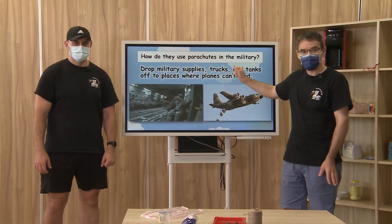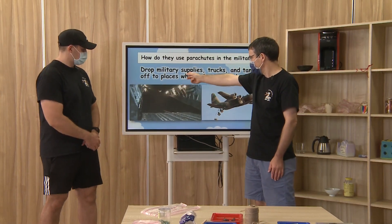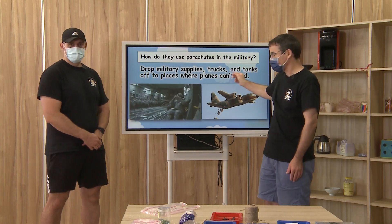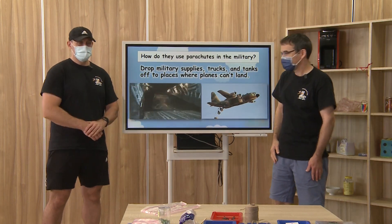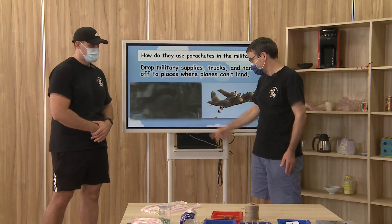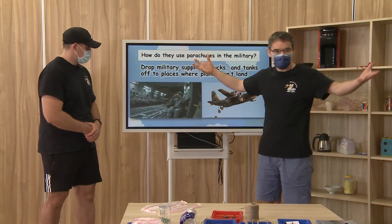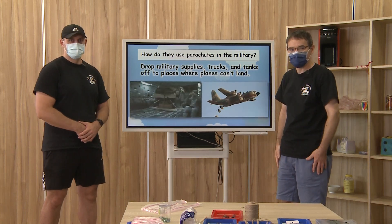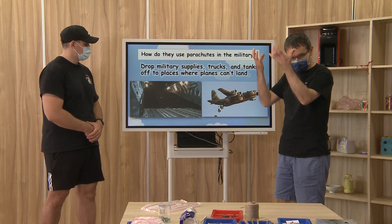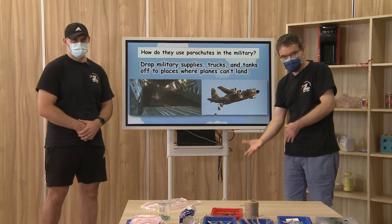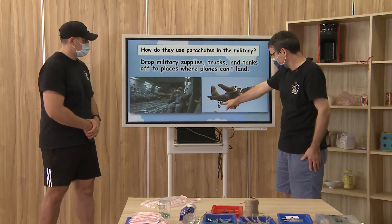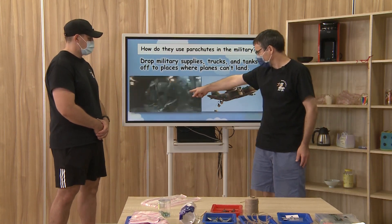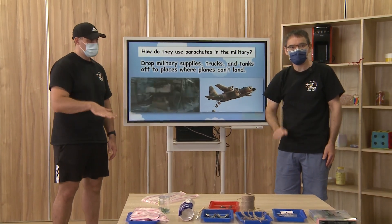Another way the military uses parachutes is dropping military supplies, trucks, and even tanks off in places where planes cannot land. Tanks are really heavy — how does that work? They just have to use a really big parachute. It's pretty amazing to see that a parachute can actually slow a tank down from dropping to the ground. Here looks like some kind of supplies — big crates. They will drop the truck and it'll land safely to the ground.